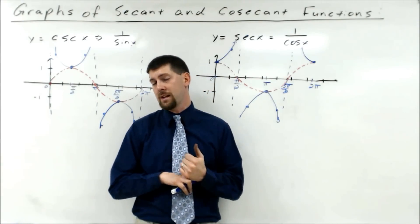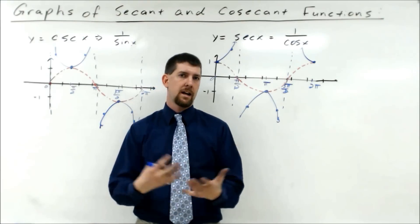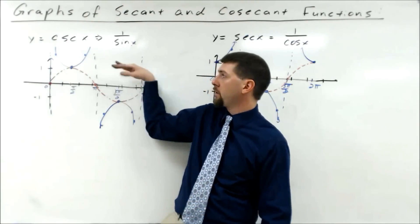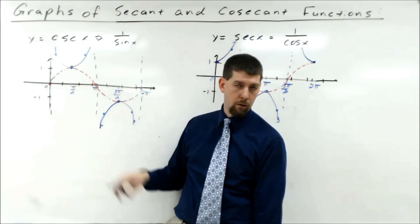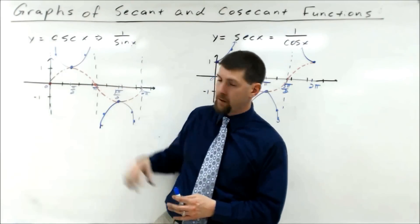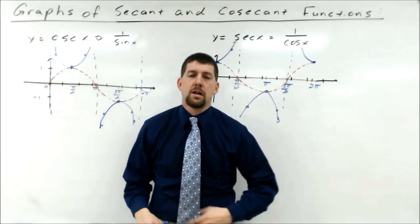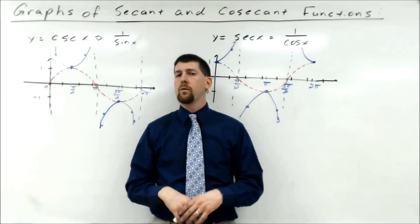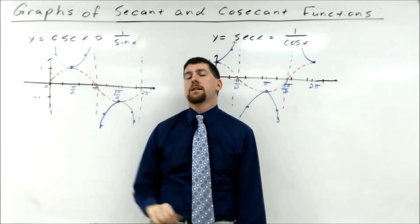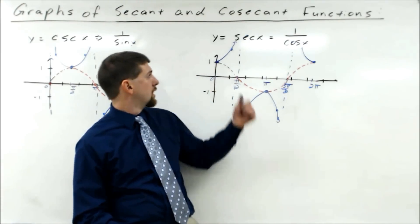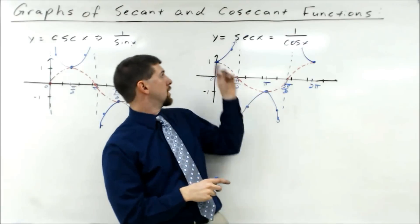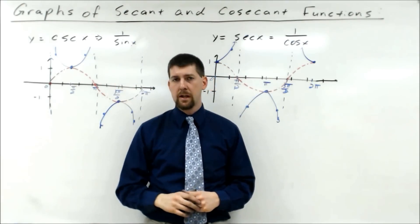Secant and cosine have the same relationship as cosecant and sine — shifted 90 degrees — same picture, same idea. For building the graph: amplitude is |a|, but it's not true amplitude; it's the height of those boundary points — you can't go below the local minimum or above the local maximum. Period is still 2π/b. Increments are period over four. For direction: cosecant behaves like sine — if a and b have opposite signs, you're decreasing from the origin. For secant/cosine, only a matters: if a is positive, start at a maximum; if negative, start at a minimum.